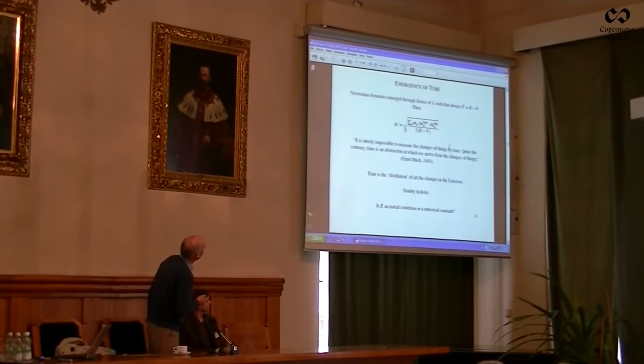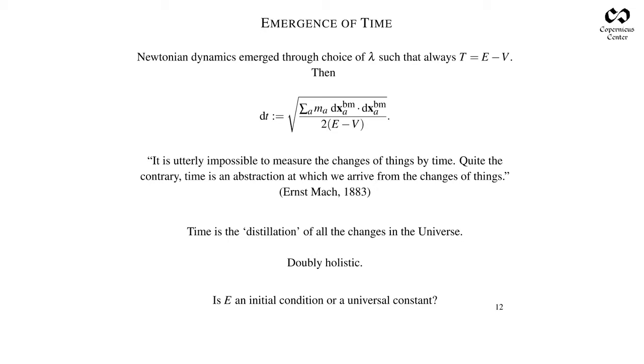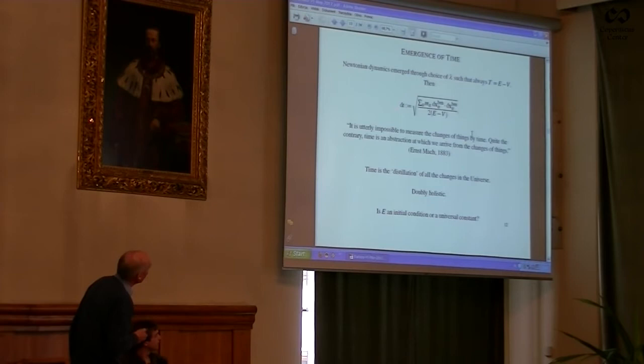Let me press on and show you how time emerges. It's very illuminating to rewrite this explicitly. This is the increment of that distinguished time. You see that it's a completely holistic expression. You take all of those best-matched displacements, divide by this quantity here, and you get a completely explicit expression for time in terms of everything that's happening in the universe.